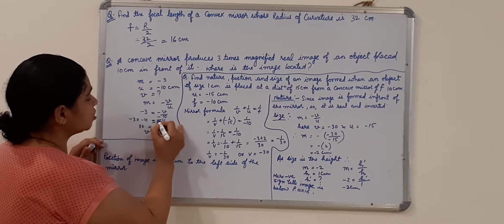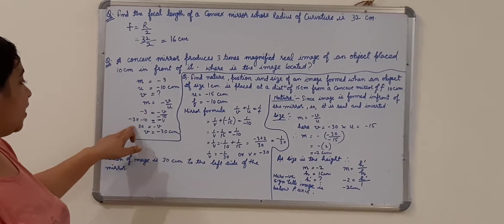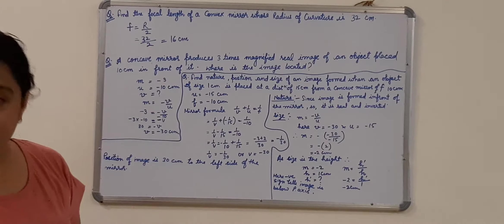Minus V is equals to, well, minus V is equals to 30 and V is equals to minus 30 cm.